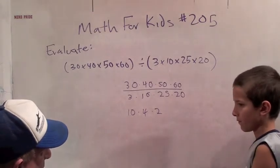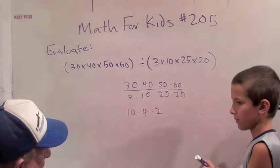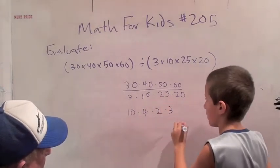And 60 over 20 is 30. 60 over 20? That's 3. Oh, 3. Okay, 60 over 20 is 3.